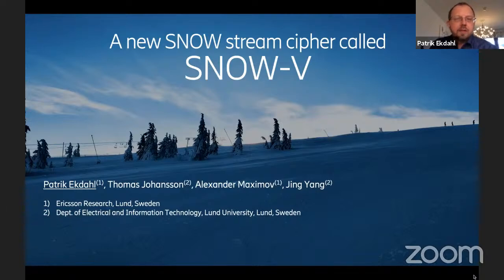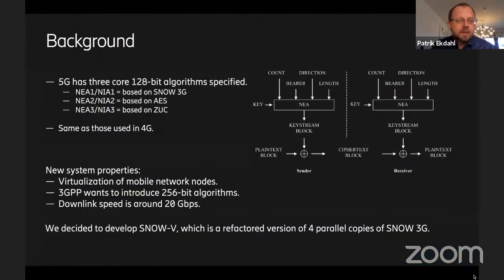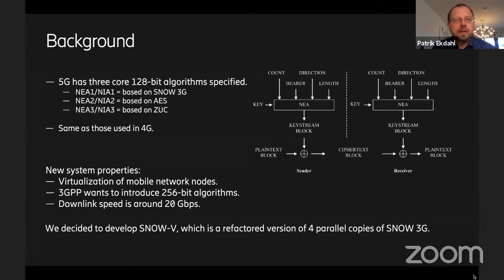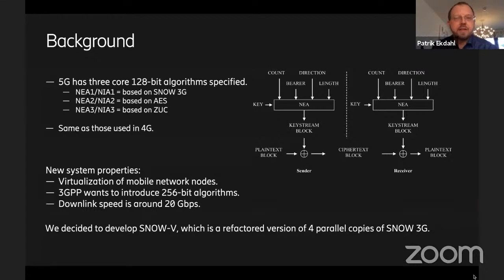As the title suggests, this is a new stream cipher that we are proposing. The background is the encryption algorithms used in cellular networks, specifically in 4G. The algorithms protecting the link in 4G have also been adapted to 5G. There are three core algorithms specified there: the first is based on Snow 3G, the second on AES, and the third on ZOCV.